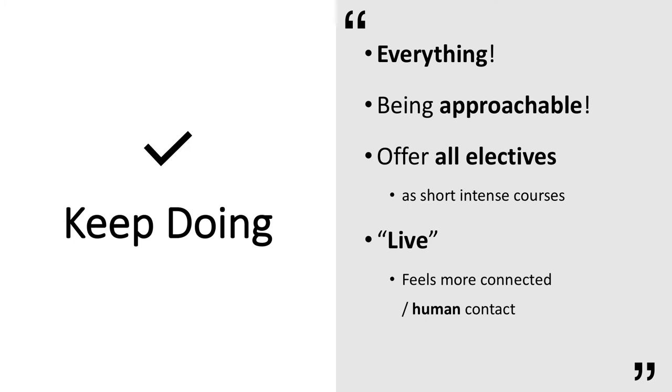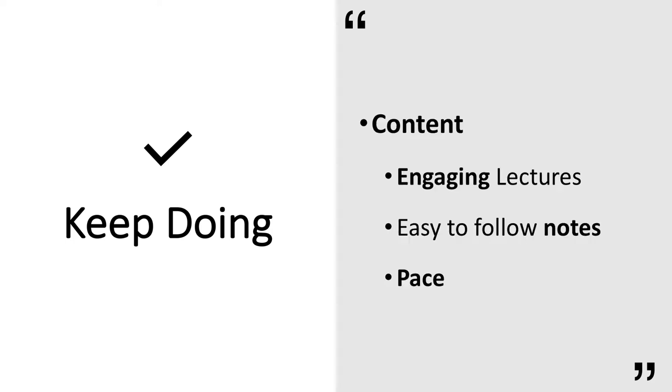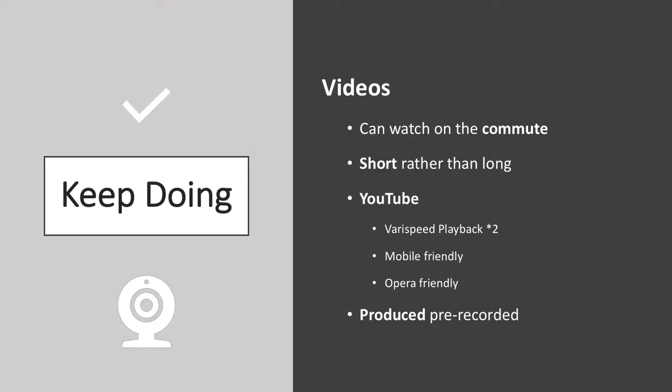For 'keep doing' feedback: keep being approachable, keep offering all electives even as short intense courses, and keep doing live — it feels more connected and students like the human contact. Keep doing content with engaging lectures, easy-to-follow notes, and the right pace. Keep doing videos — students can watch on the commute, prefer shorter ones, and want YouTube for variable playback speed and mobile compatibility. One student noted the only way he could watch while at work was in Opera, which Adobe Connect was incompatible with. They also wanted pre-produced videos.